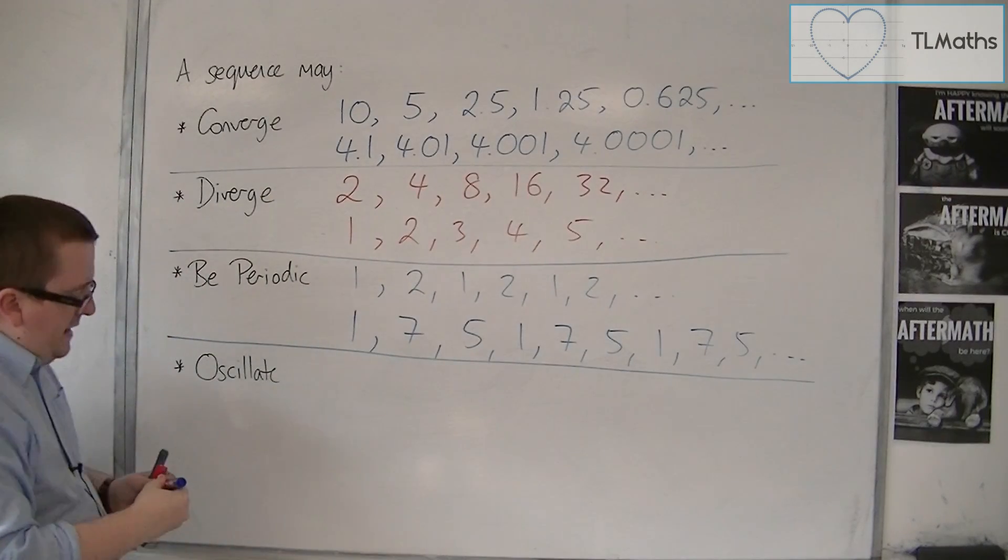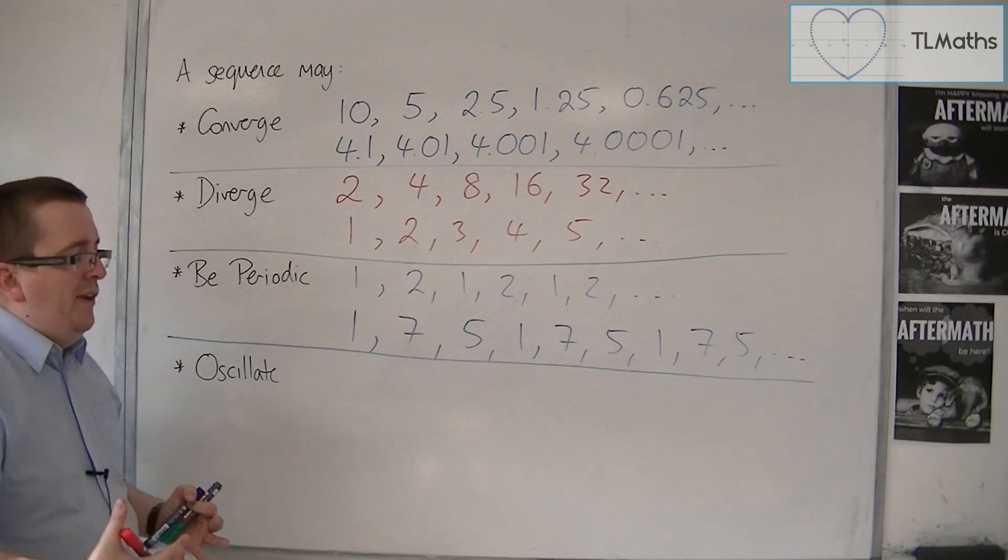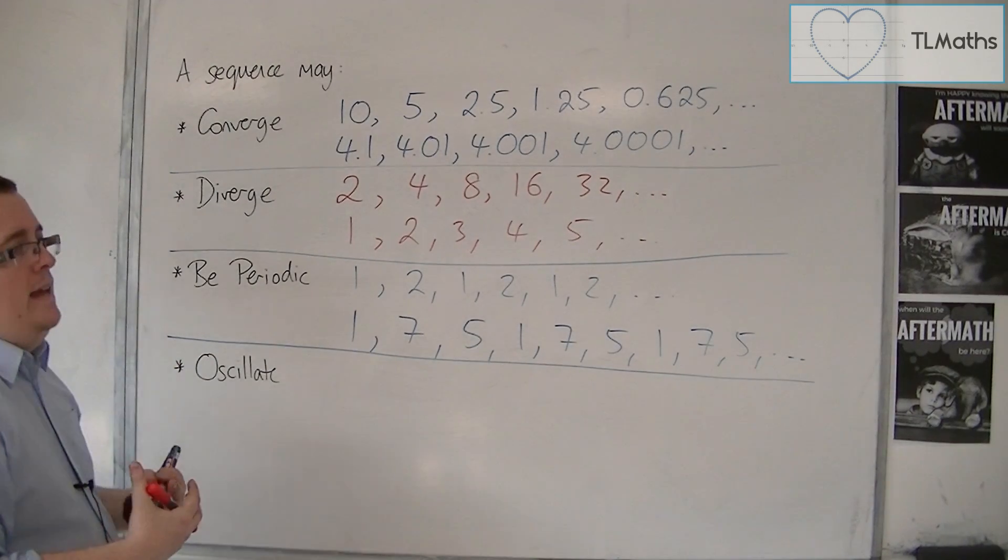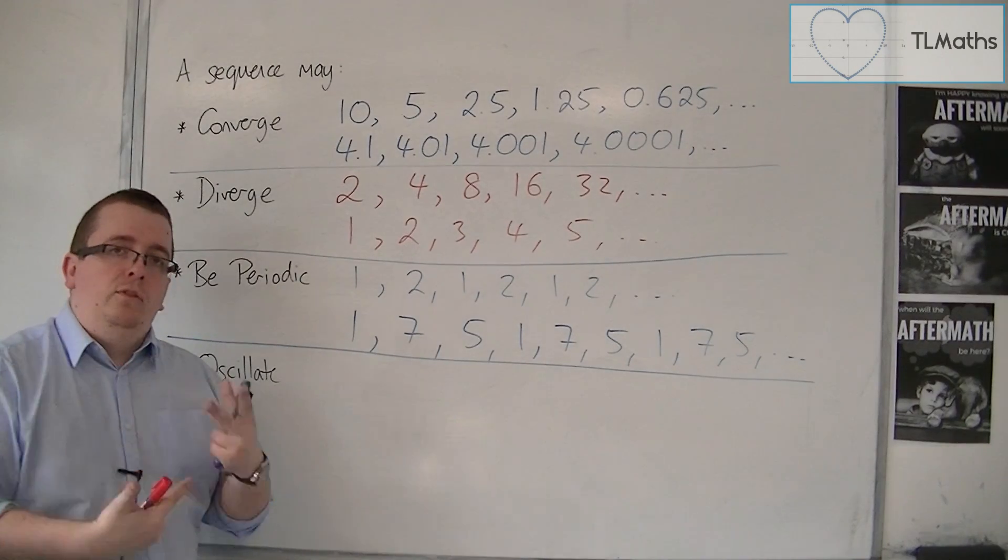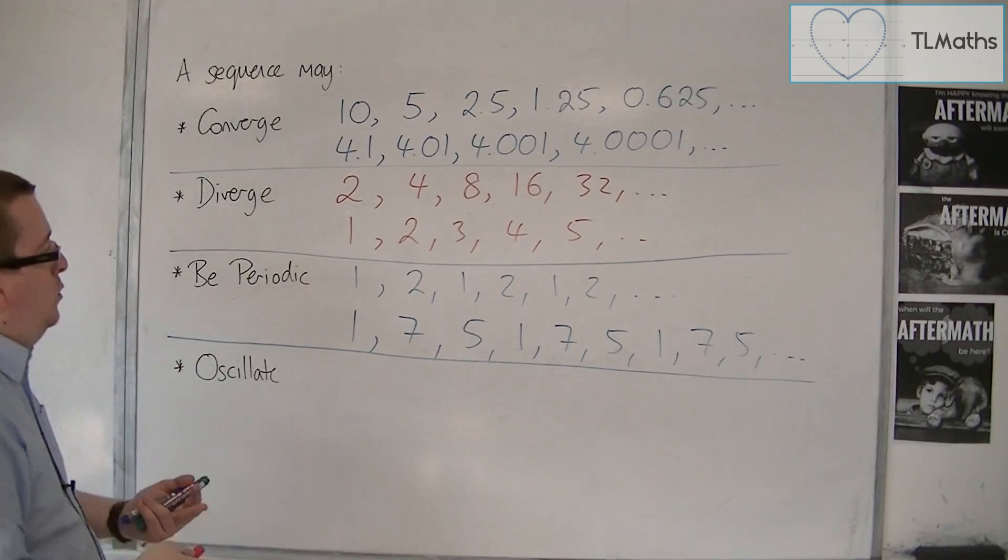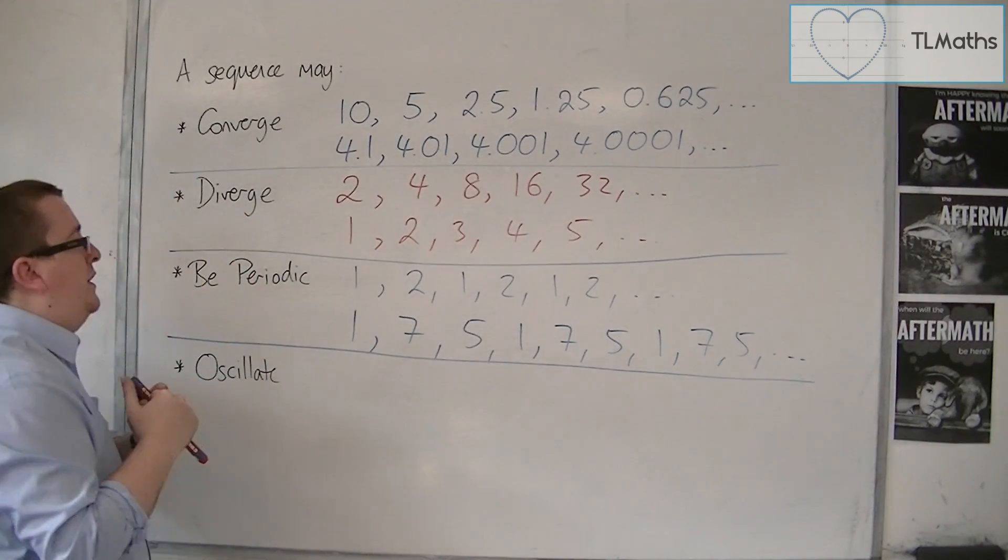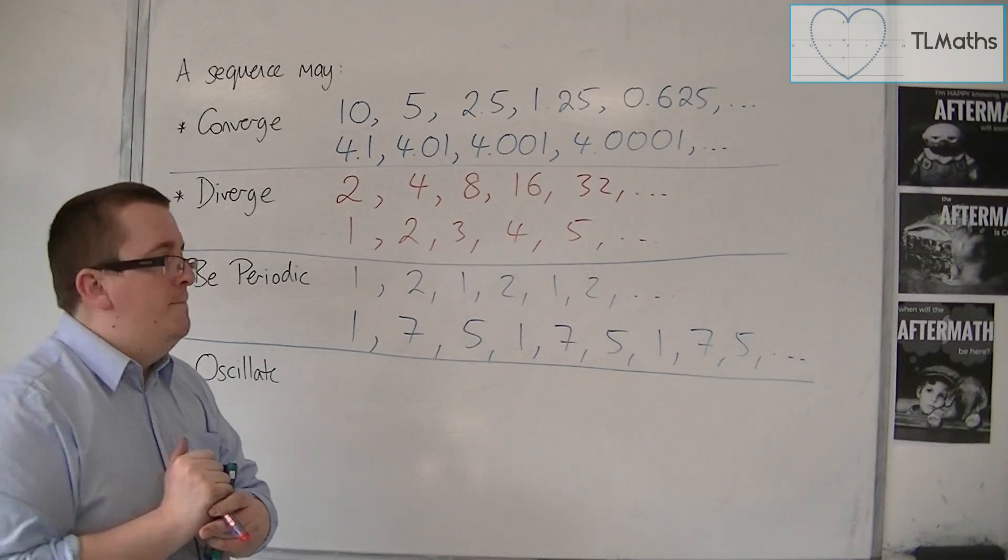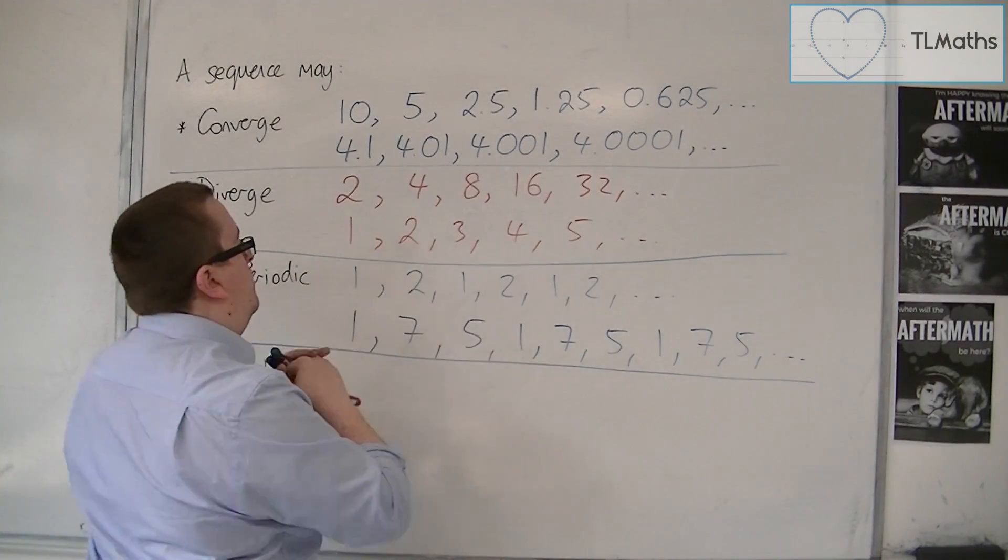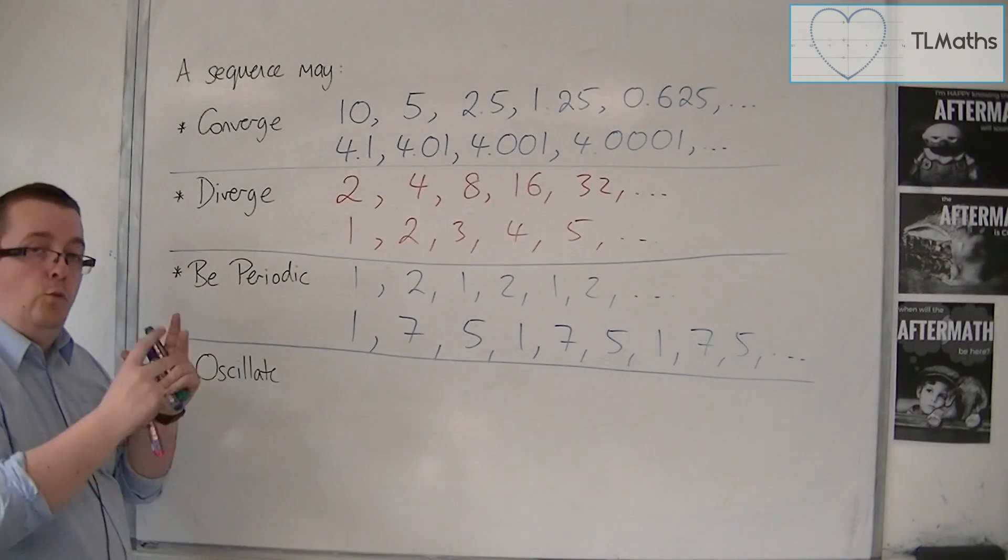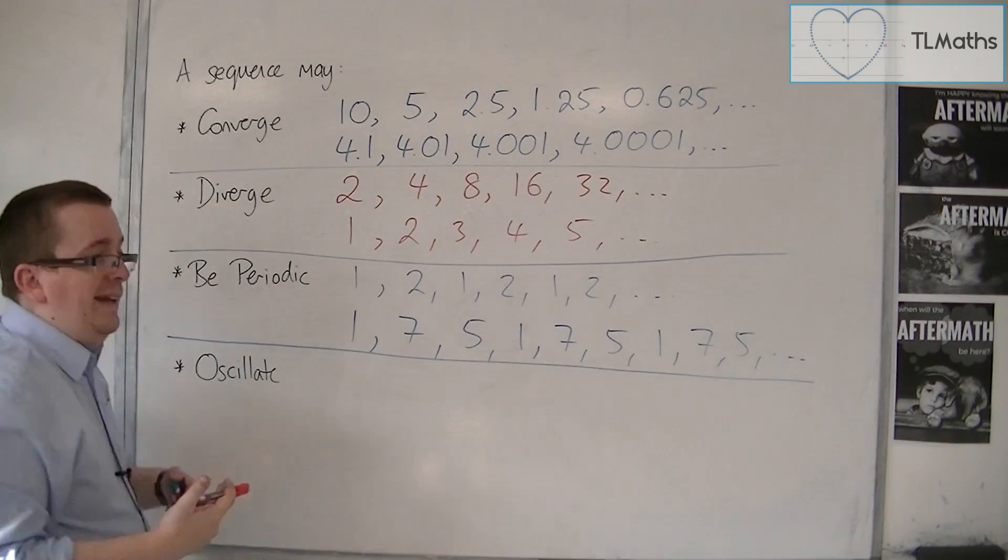What does it mean to oscillate? For a sequence to oscillate, it must be oscillating between some middle value. You could call this sequence oscillating. You could say that it is oscillating between around 1.5.